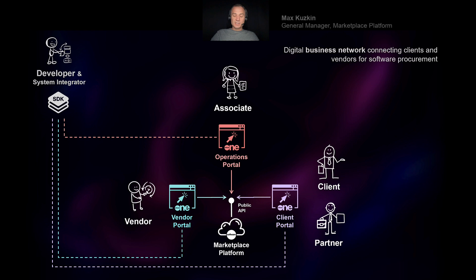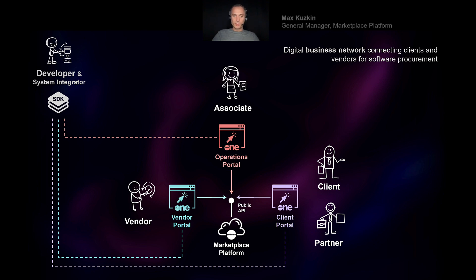Our platform is essentially a SaaS application itself, with a public API and three different user interfaces — technically the same interface but different accounts. We call them the Vendor Portal, Client Portal, and Operations Portal. As their names suggest, the Vendor Portal is used by vendors, the Client Portal by clients and partners, and the Operations Portal by our own associates. All functions are built on top of our public API and SDK, so every function in our platform can be automated by developers and system integrators.